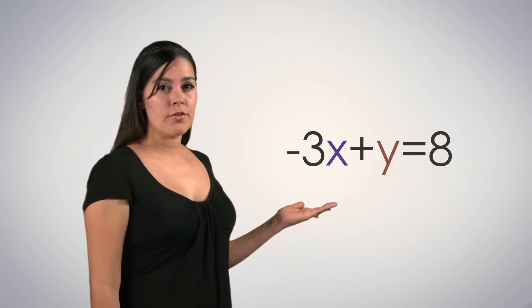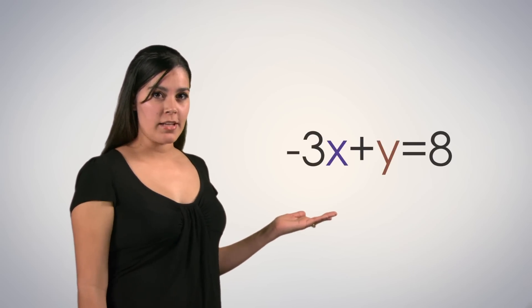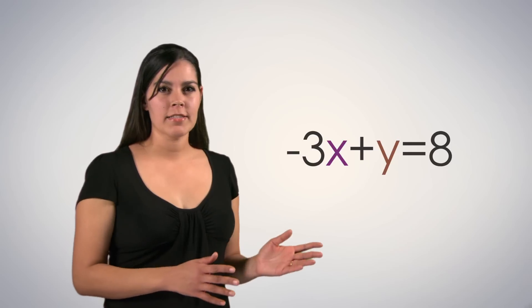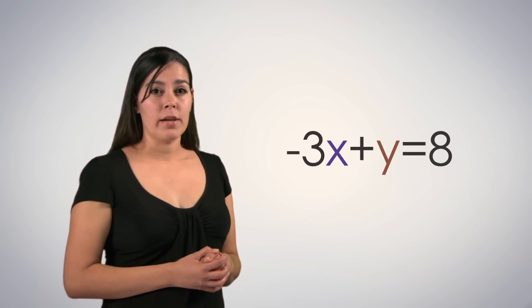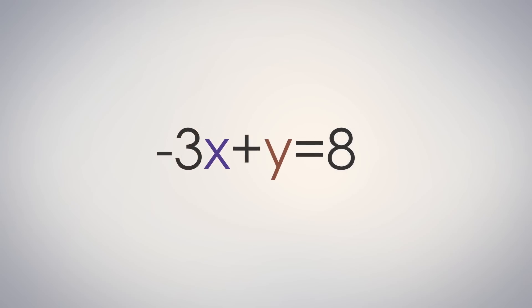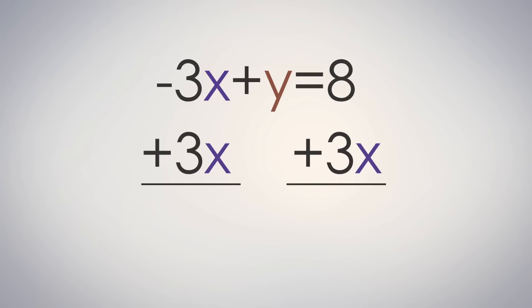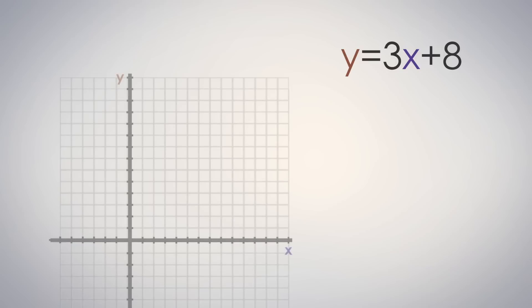We'll start with negative 3x plus y equals 8. Although we have an x, a y, and a constant, 8, they're not arranged how we'd like them. To get this equation into the y equals mx plus b form, we'll need to get y by itself. We will add 3x to both sides. This is much better. Now we can see that the slope is 3, and the y-intercept is 0, 8, making it easy to graph.